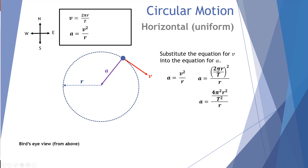Expanding the bracket: 2² becomes 4, π² becomes π², and r² becomes r² over T² — all divided by r. Bringing T² to the denominator gives a = 4π²r² / (T²r). We have two r terms, so we cancel one, giving us a new expression: a = 4π²r / T². Both equations are valid — the first when you have velocity and radius, the second when you have radius and period.